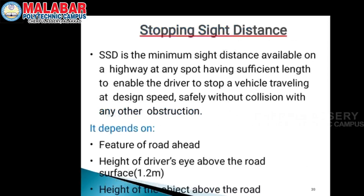We are talking about stopping sight distance. Stopping sight distance is very important. It is the minimum sight distance available on a highway at any spot having sufficient length to enable the driver to stop a vehicle traveling at design speed safely without collision with any obstruction.